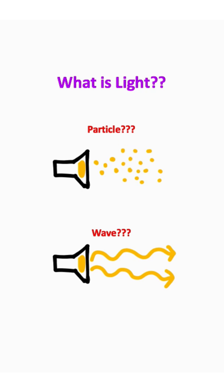Light was first theorized to behave only as a particle, but then a scientist by the name of Thomas Young discovered that it behaved like a wave.